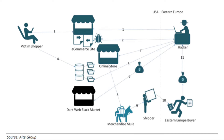So in step eight, they need to find a way to launder these transactions. The goods are shipped to a preselected merchandise mule. Generally, they find these mules by recruiting online with specific job posts, basically promising the ability to work from home and earn large sums of money in exchange for shipping merchandise purchased with stolen credit cards. Step nine: the mules work with local shippers to receive under-the-table payment to send goods to Eastern European countries, generally speaking. Step ten: once at the destination, the merchandise is fenced to local buyers. And finally, in step eleven, attackers may also get a percent of the proceeds from that final sale.